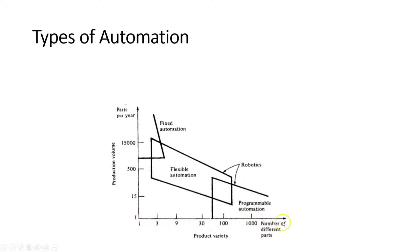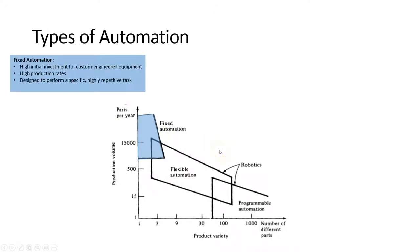On the x-axis we have product variety — the number of different parts we're making. On the y-axis we have production volume, representing the number of parts made per year. With fixed automation, we're talking about very little product variety, but we can produce a high volume of parts. Fixed automation typically has very high production rates because it's designed to perform a specific, highly repetitive task very quickly.